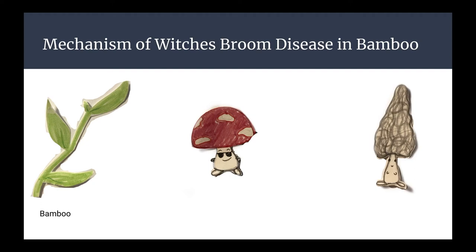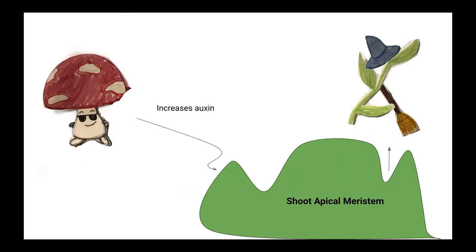In bamboo, fungi can affect the levels of auxin. In one study, researchers showed how both Aitake and Hsace, both members of the clavisepticide family, can cause a disruption of the auxin levels. Aitake will increase the auxin levels by having endophytic hyphae in the meristematic tissue at the shoot apical meristem. This will cause there to be continuous initiation of the primordia at the shoot apex. However, there will not be enough auxin to alter the leaves and stems of the plant. This constant initiation at the primordia will promote the broom-like morphology of the plant.